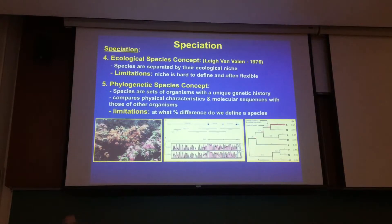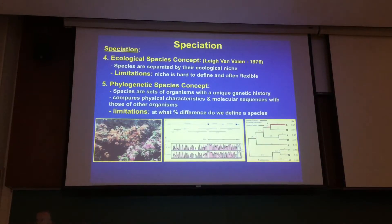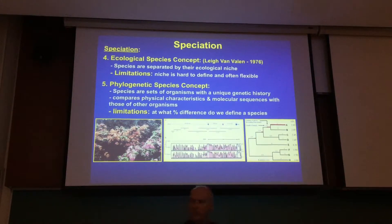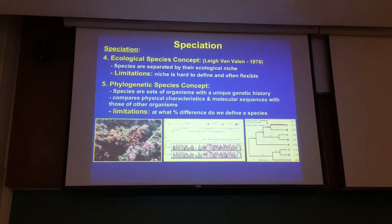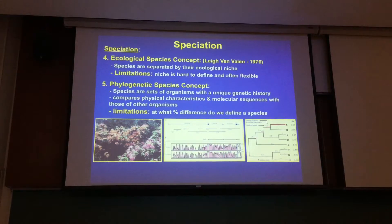The ecological species concept bases the species on their ecological niche. This one is widely inaccurate. Its limitations: it's really hard to decide what a niche is — it's multi-dimensional axes, the n-dimensional hypervolume. Your niche changes, expanding and contracting, and it's quite flexible over the lifetime of an organism.